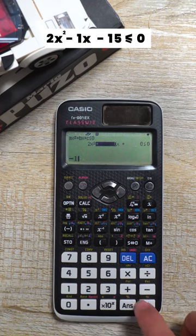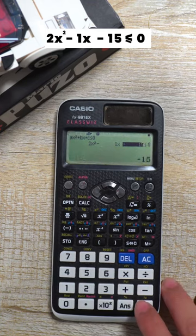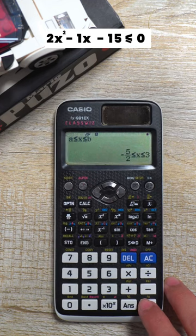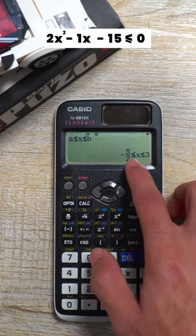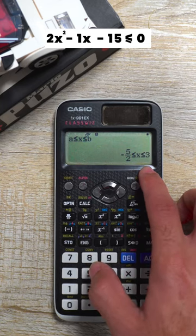Press equals two, and then press equals two again. Wait for the magic. There you go! You now have the final answer: x is greater than or equal to minus five upon two and less than or equal to three.